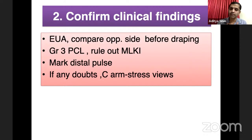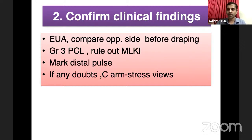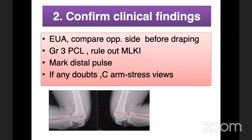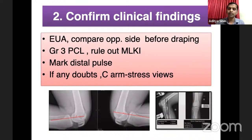Comparing findings with the opposite side before draping gives a lot of information — whether there are collateral injuries, meniscal injuries, stress varus or valgus. This is very well elicited under anesthesia. Especially in grade 3 PCL cases, always rule out other collateral injuries, most commonly posterolateral corner but potentially medial injuries also. Before beginning surgery, mark the digital pulse — it's good habit to check pulses in all arthroscopic knee cases. If in doubt, use the C-arm for stress views both medial-lateral and anteroposterior to further confirm the PCL diagnosis.